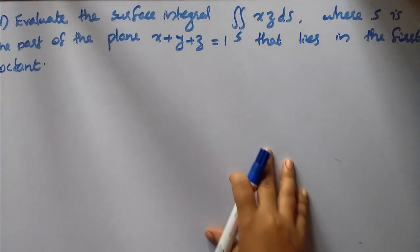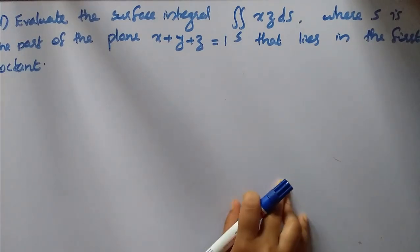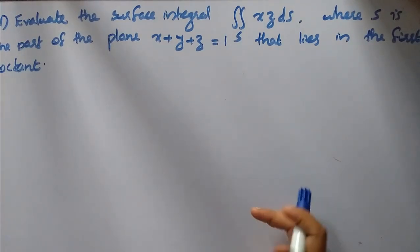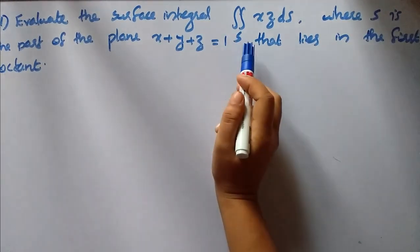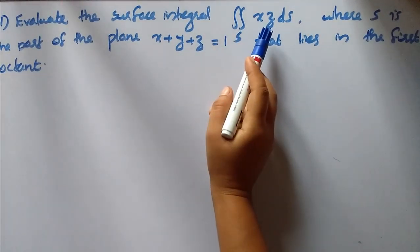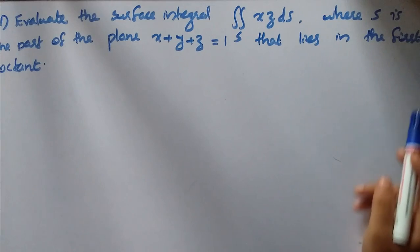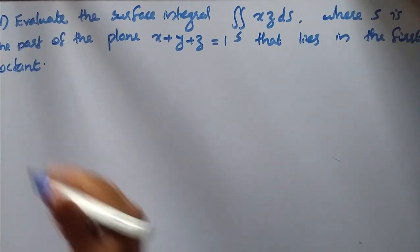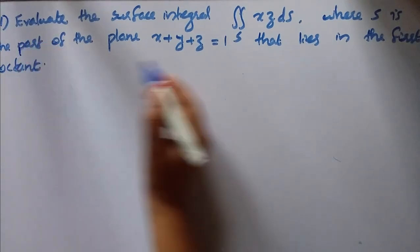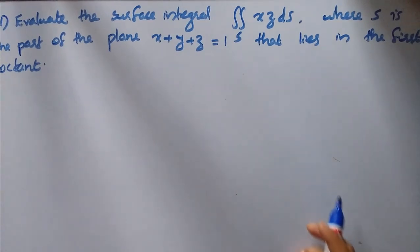In this class we will discuss some problems. The first question is: evaluate the surface integral, double integral over S of x·z ds, where S is the part of the plane x plus y plus z equal to 1 that lies in the first octant.